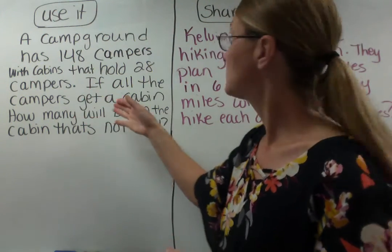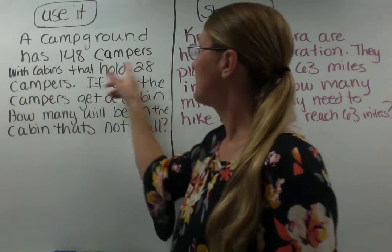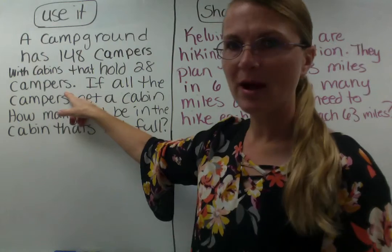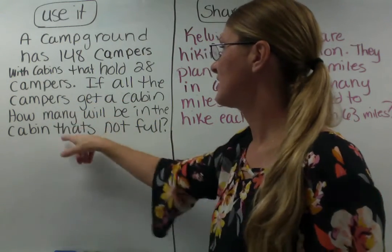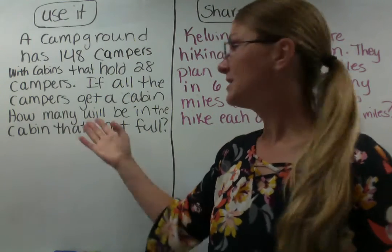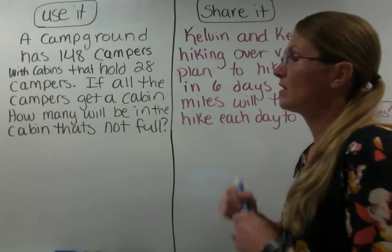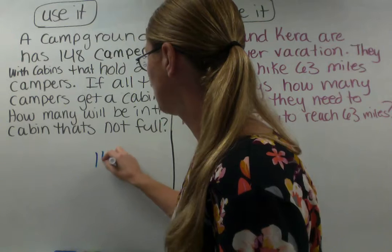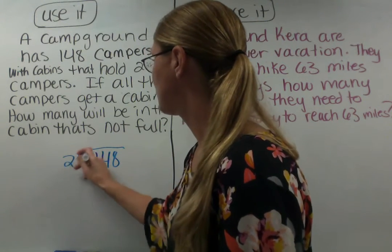We're going to look at this problem first with using the remainder. A campground has 148 campers with cabins that hold 28 campers. This is pretty much the same problem we did yesterday, but I changed the question. If all the campers get a cabin, how many will be in the cabin that's not full? Yesterday, we wanted to know how many full cabins there are. Today, same problem, but how many are in the cabin that's not full? There are 148 campers and 28 campers can fit in a cabin.